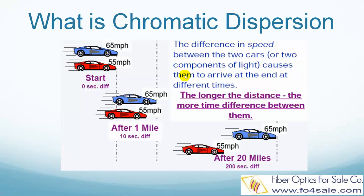Hello everyone, this is Colin from Fiber Optics for Sale. In this video I will explain what is chromatic dispersion. In an optical fiber, different colors of light travel at different speeds — the blue light may run faster and the red light may run slower.